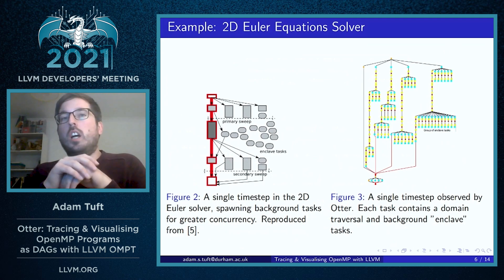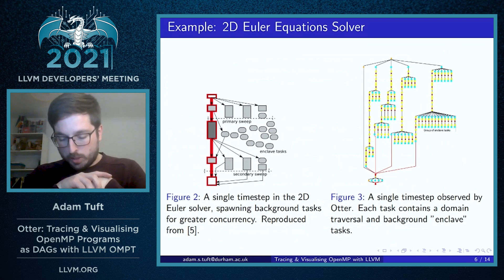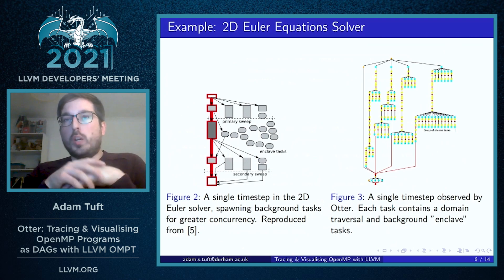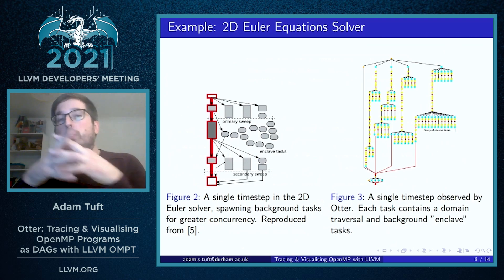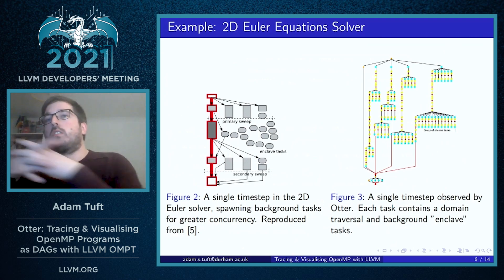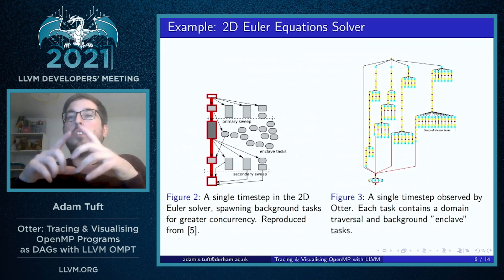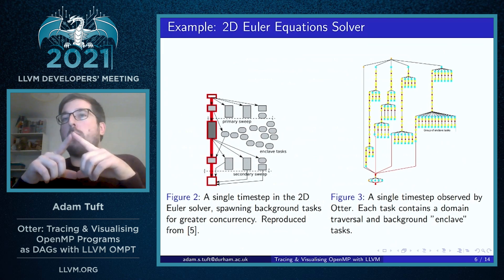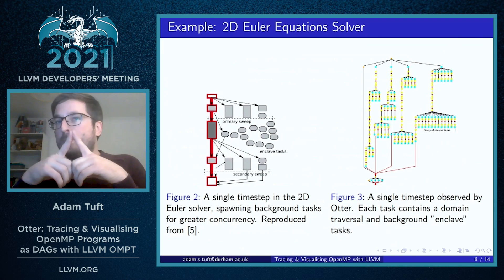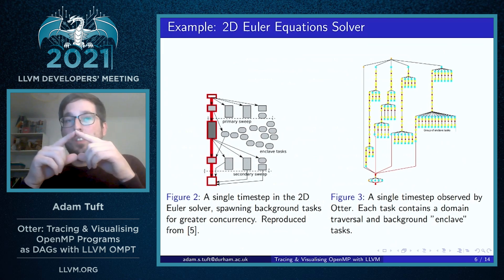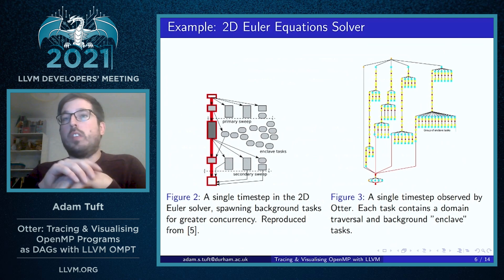Tracing this program with Otter reveals the task graph on the right-hand side. This task graph is for a single time step in this program, where we can see the main traversals of the computational domain are carried out in four separate threads running from top to bottom.